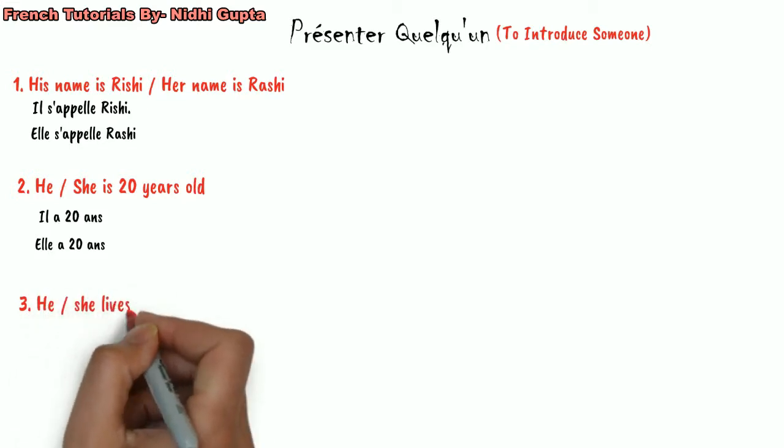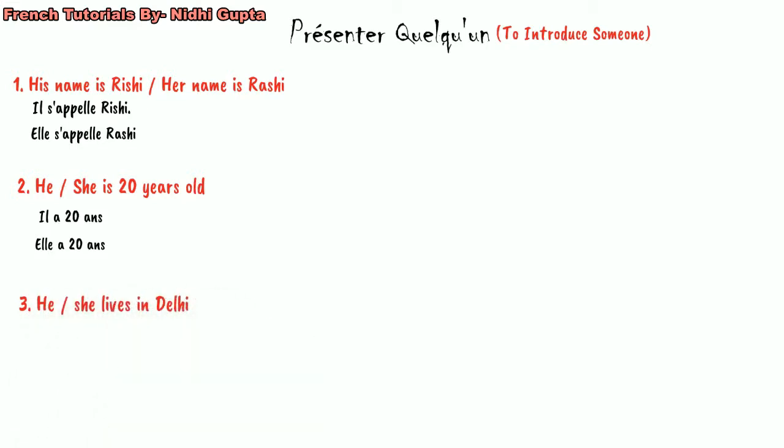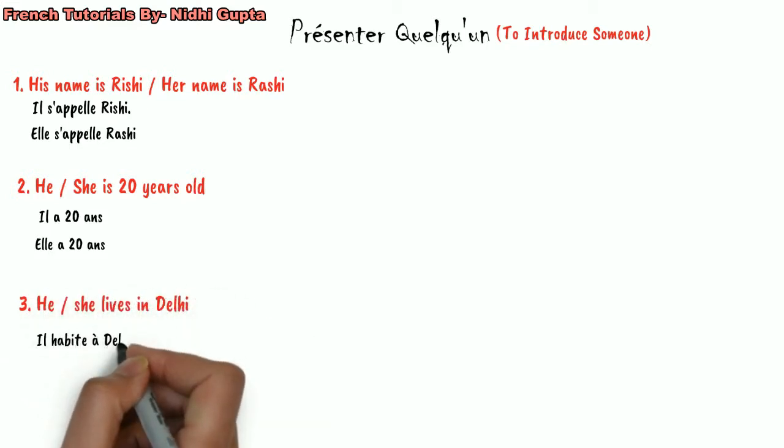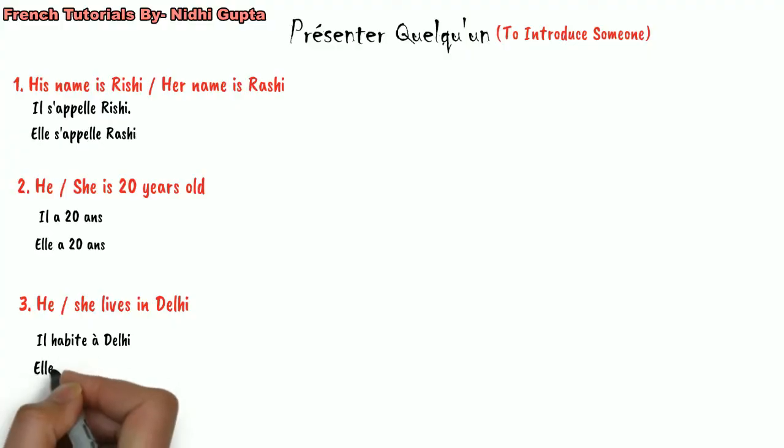Now we know how to say name and age. The third thing is where he or she resides. For Rishi staying in Delhi, we would say 'il habite à Delhi.' And if Rashi stays in Delhi, we would say 'elle habite à Delhi.' This is how we tell where somebody lives in a city.